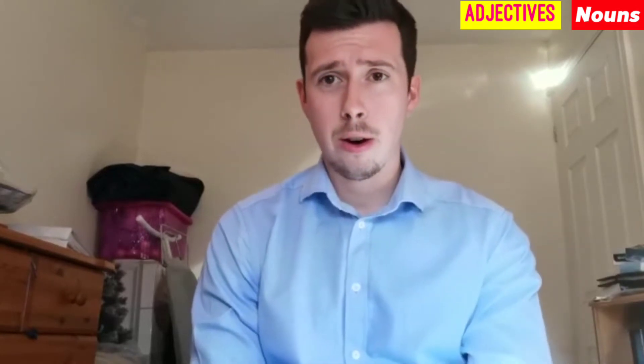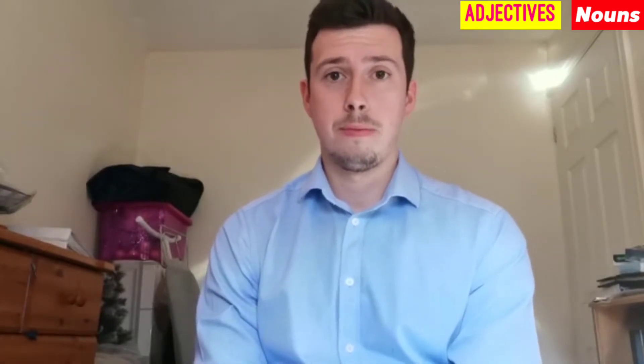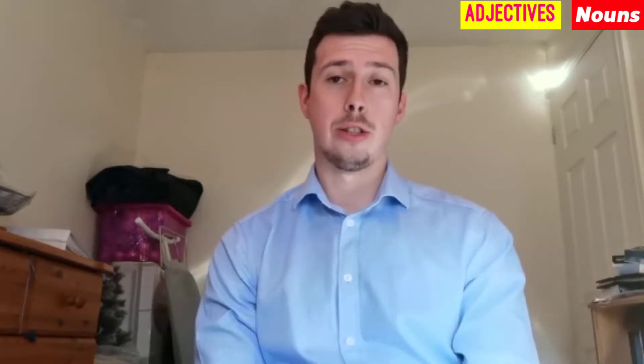A noun is a person, a place, or a thing. For example, I'm in this room right now and I'm sitting at a table, so the noun would be 'table.' An adjective is a word to describe that noun — so the table is smooth, and 'smooth' is the adjective.